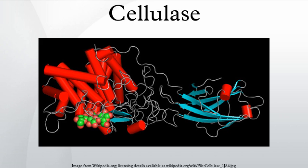Most fungal cellulases have a two-domain structure, with one catalytic domain and one cellulose-binding domain that are connected by a flexible linker. This structure is adapted for working on an insoluble substrate, and it allows the enzyme to diffuse two-dimensionally on a surface in a caterpillar-like fashion. However, there are also cellulases that lack cellulose-binding domains; these enzymes might have a swelling function.